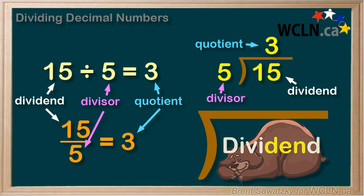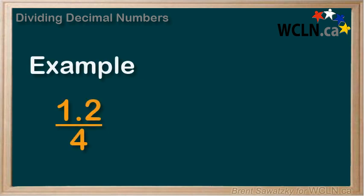Let's consider what happens when we have decimal numbers involved in our division. For instance, what if we have 1.2 divided by 4? With a decimal, it looks a bit confusing.